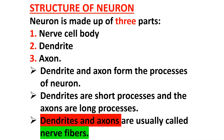A neuron is made up of three parts: cell body, dendrite, and axon. Dendrites and axons form the processes of the neuron. Dendrites are short processes and axons are long processes. Dendrites and axons are usually called nerve fibers.